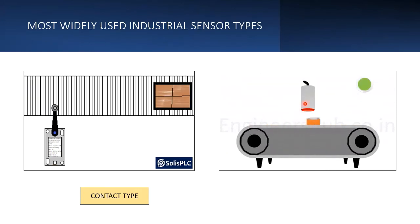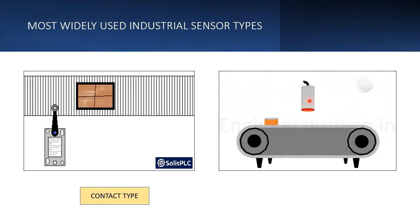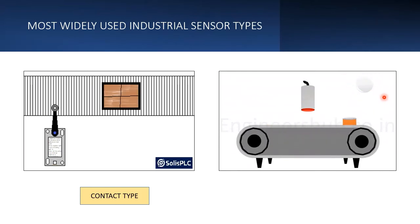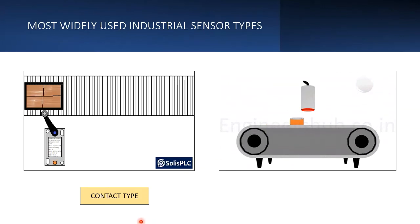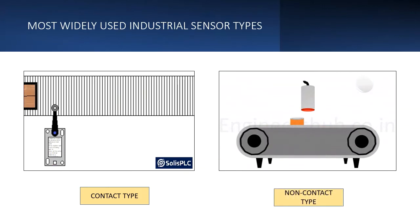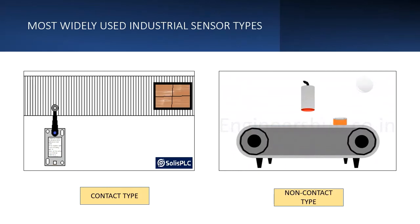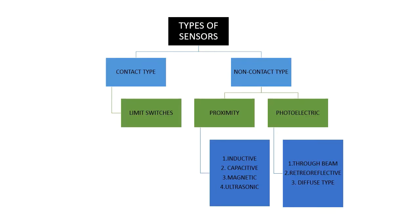In the second example, we again have a conveyor and a job is passing. There is a sensor, and when the job comes under the sensor you can see we are getting a signal — a green light. This is a non-contact type sensor because the sensor is not actually touching the job.